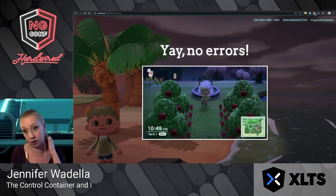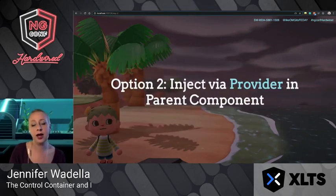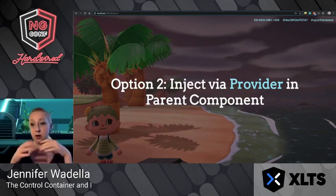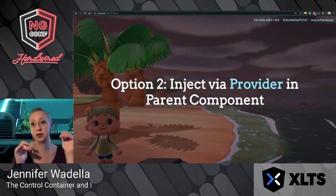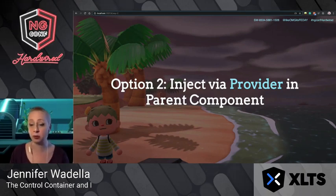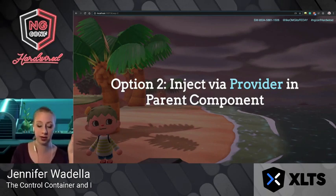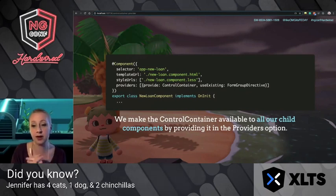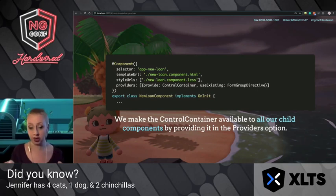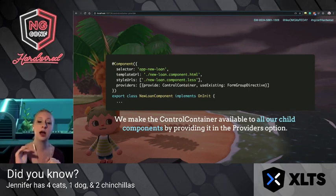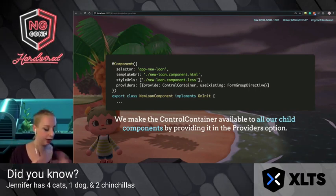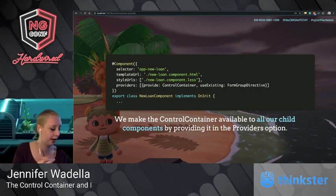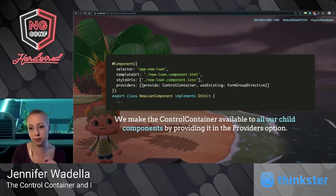That might be tedious though, because we'd have to go into every child component and inject the ControlContainer via viewProviders with useExisting of FormGroupDirective. A more pragmatic option is to inject it in the providers of our parent component. This makes the ControlContainer available to all child components — step one, a nested address component, all of them will have access to that parent FormGroupDirective. This is a great solution if you just need to handle binding via FormControlName.